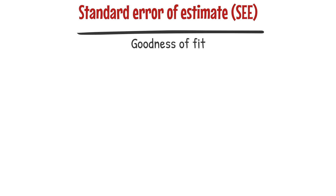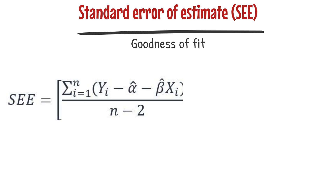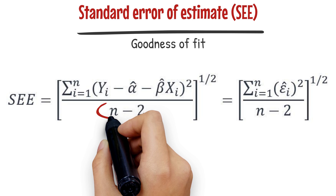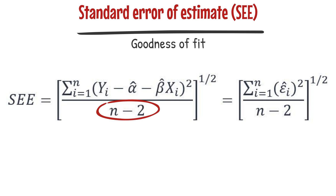The formula for calculating the standard error of estimate for a linear regression model with one independent variable is given as follows. We use n-2 in the denominator because the sample includes n observations and the linear regression model estimates two parameters, alpha and beta. The difference between the number of observations and the number of parameters is n-2.